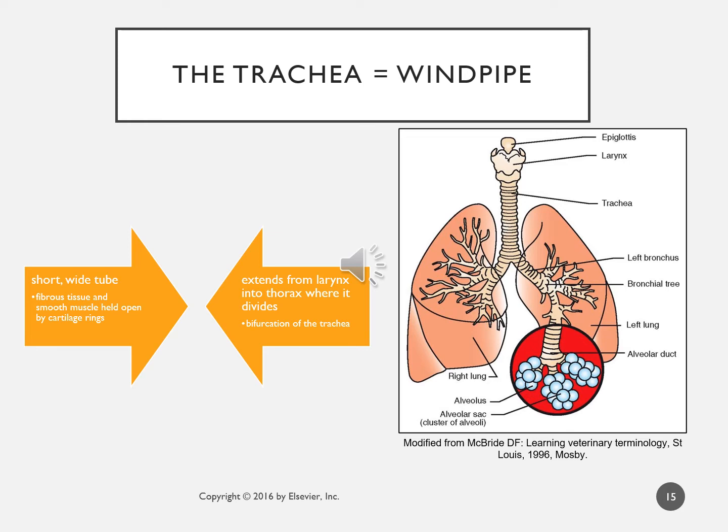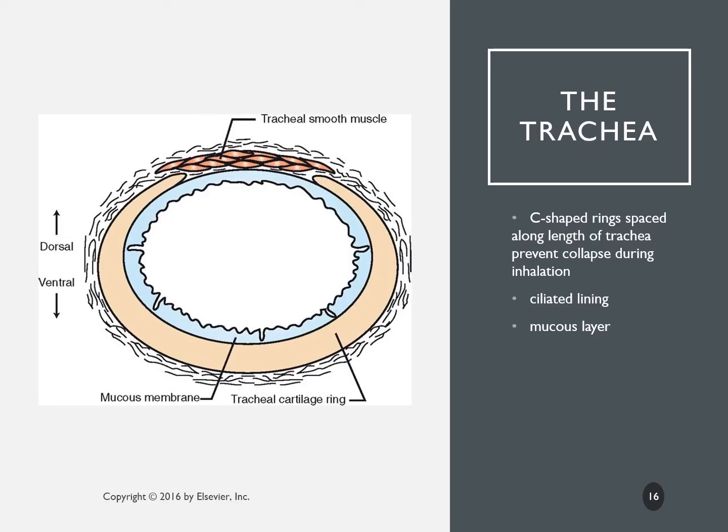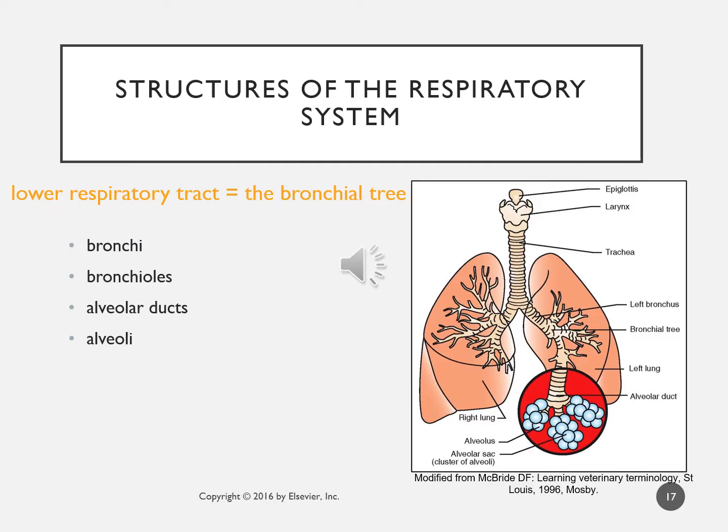The bifurcation of the trachea shows the left and right bronchus. It further goes down the bronchial tree into bronchioles, then alveolar ducts, and then alveolar sacs — several furcations, but there is only one bifurcation at the trachea. The lower respiratory tract is the entire bronchial tree: bronchi, bronchioles, alveolar ducts, and alveoli — everything extending down from the trachea.